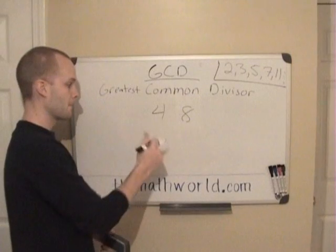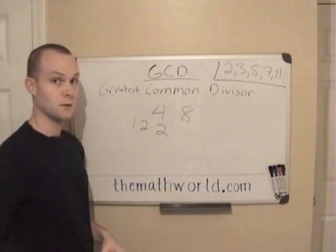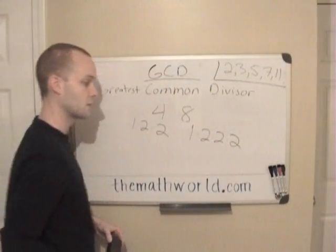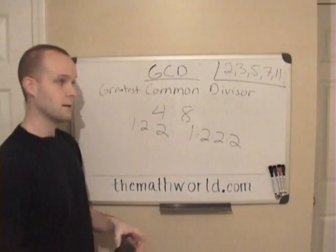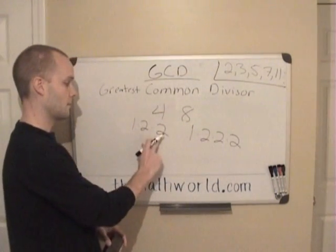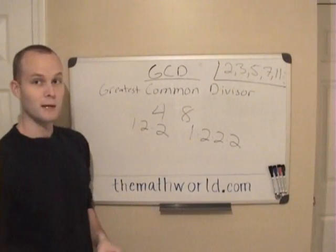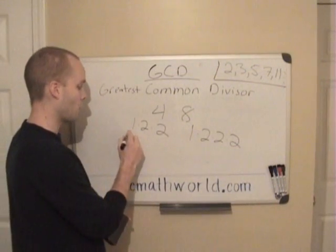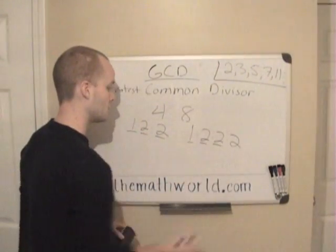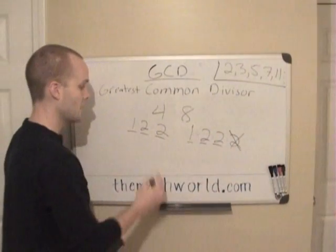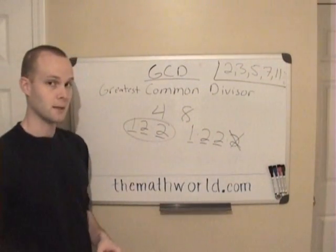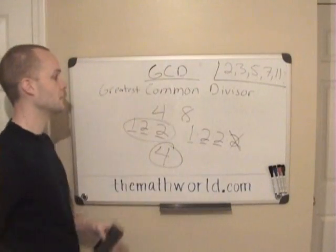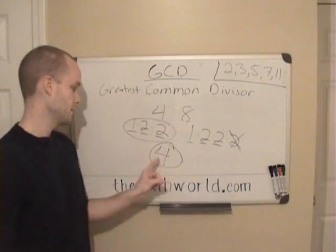For example, to get 4 we're going to multiply 1 times 2 times 2. Now to get 8, we're going to multiply 1 times 2 times 2 times 2. There are no other numbers that fit into these. So we break these numbers down using multiplication, then compare and find what they have in common. They both have a 1 and two 2s, so 1 times 2 times 2 is 4. The greatest common divisor between 4 and 8 is 4.